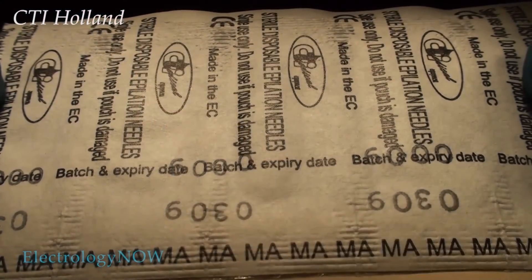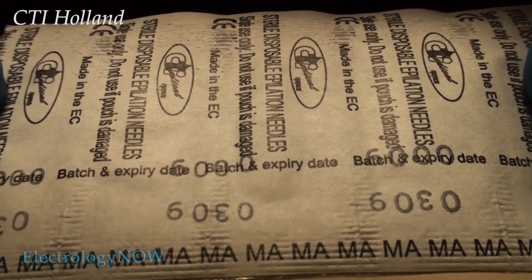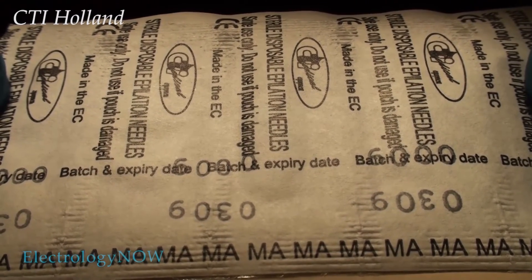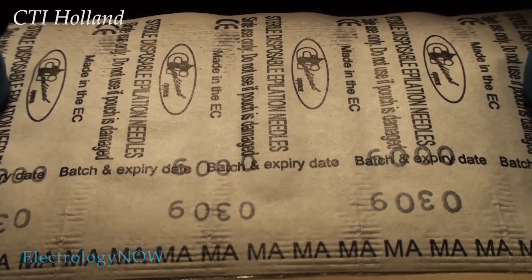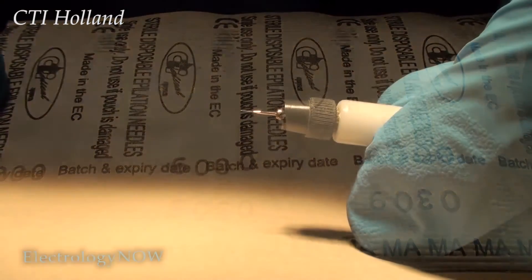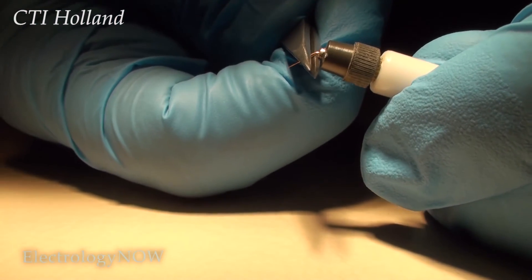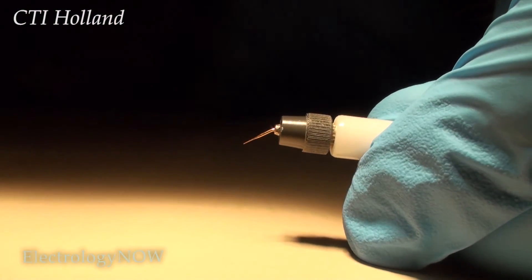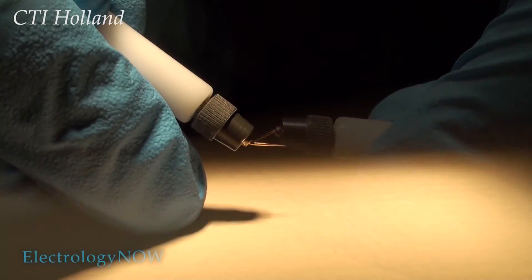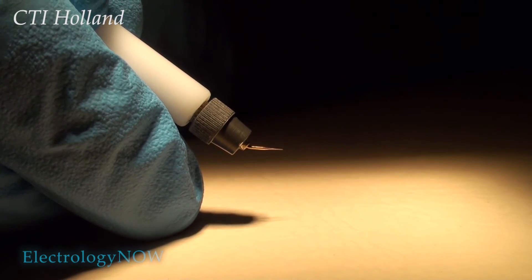In the no longer available category, these are needles that were made by a Dutch company called C-T-I. These were nice needles. They bent easily and they were gold-plated. This is a small size for tiny hairs. This is your C-T-I gold-plated needle.